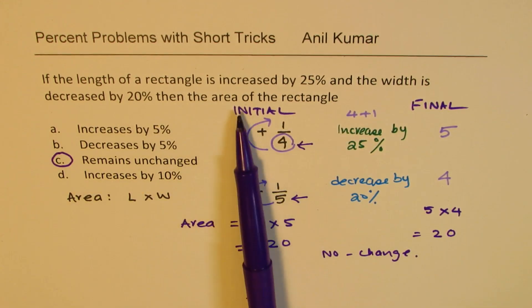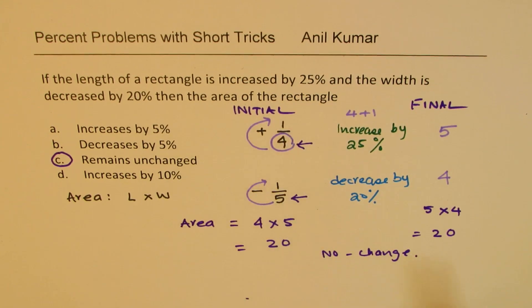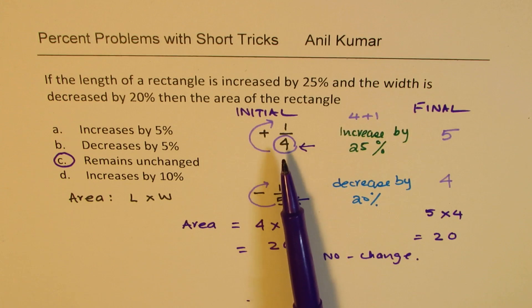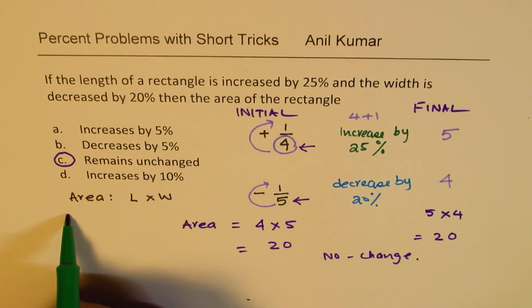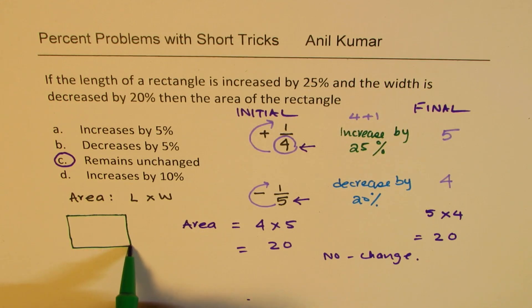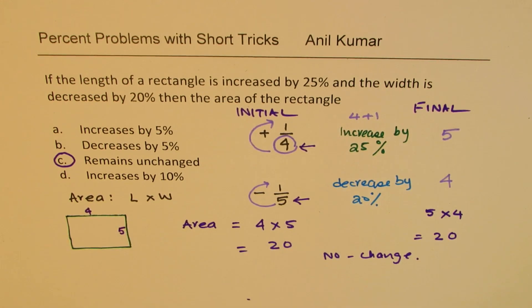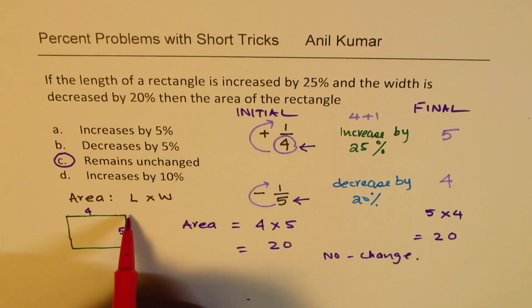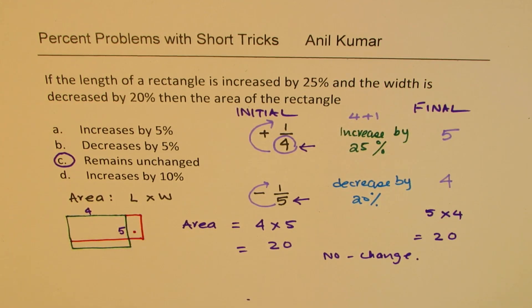Let's look again. 25% means 1 over 4. This was initially 4. When increased by 25%, I changed it like 4 plus 1 to get 5 as our new value. The initial was 5, now when decreased by 20%, it becomes 4. The areas we found are the same, so there's no change.